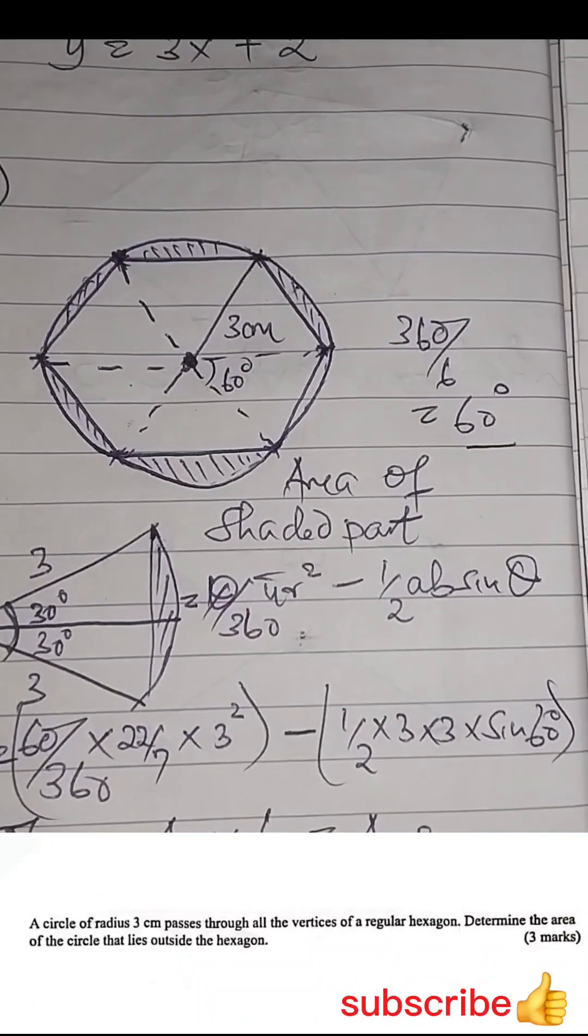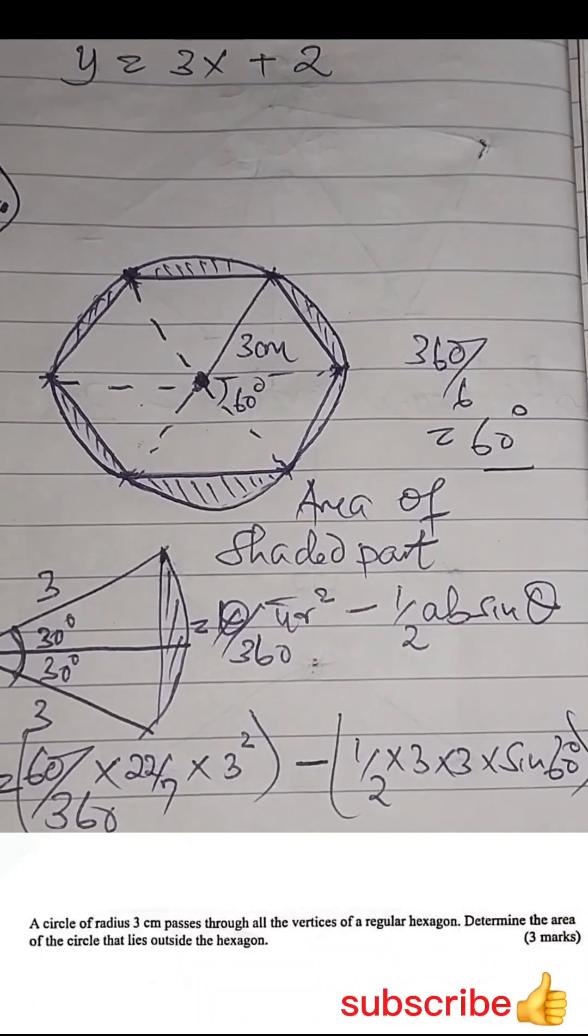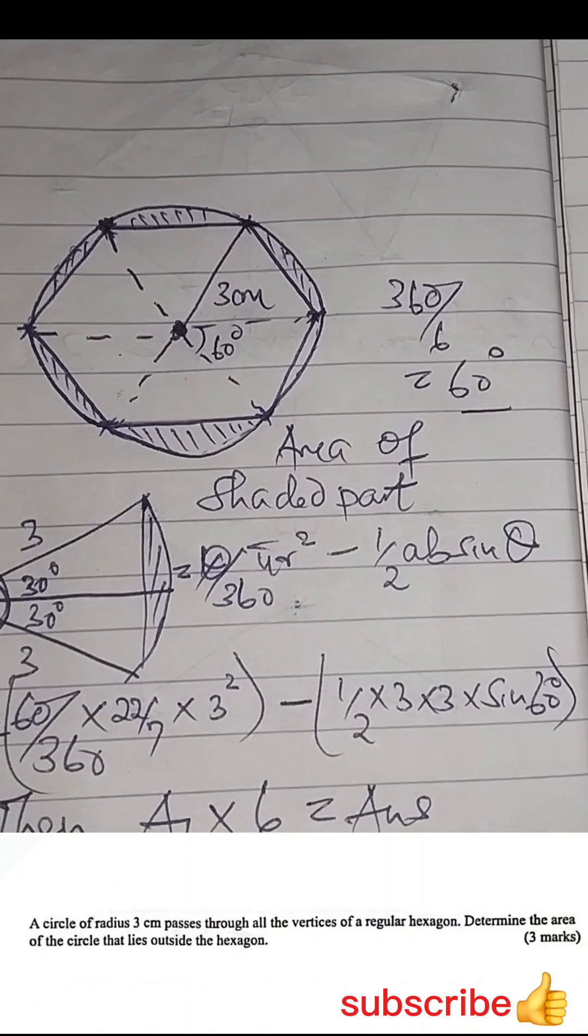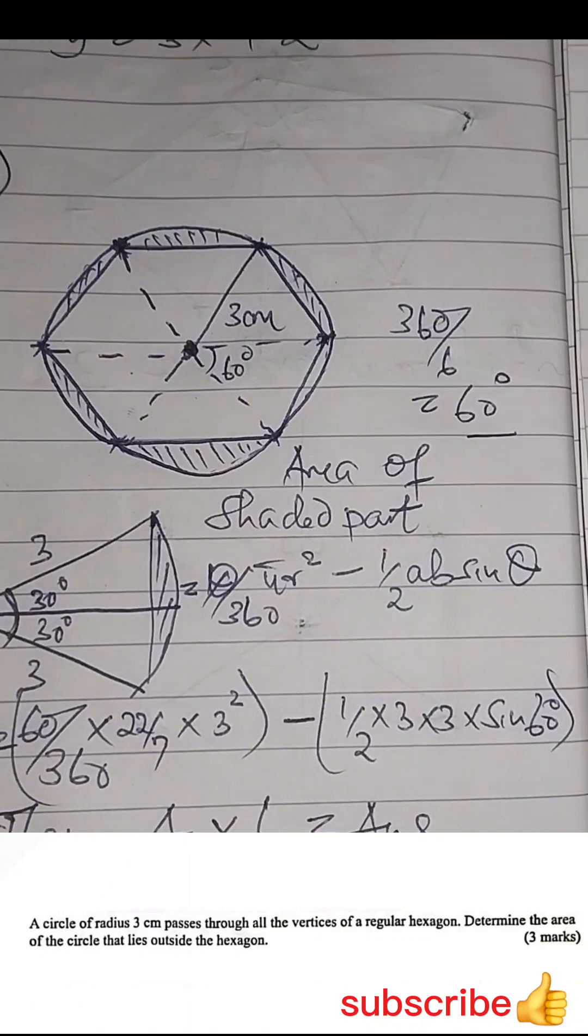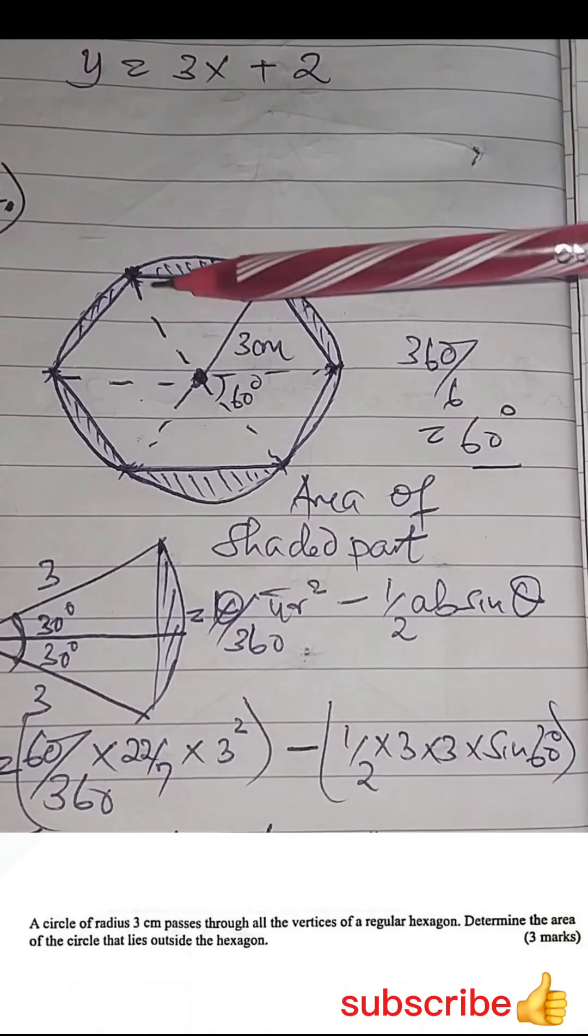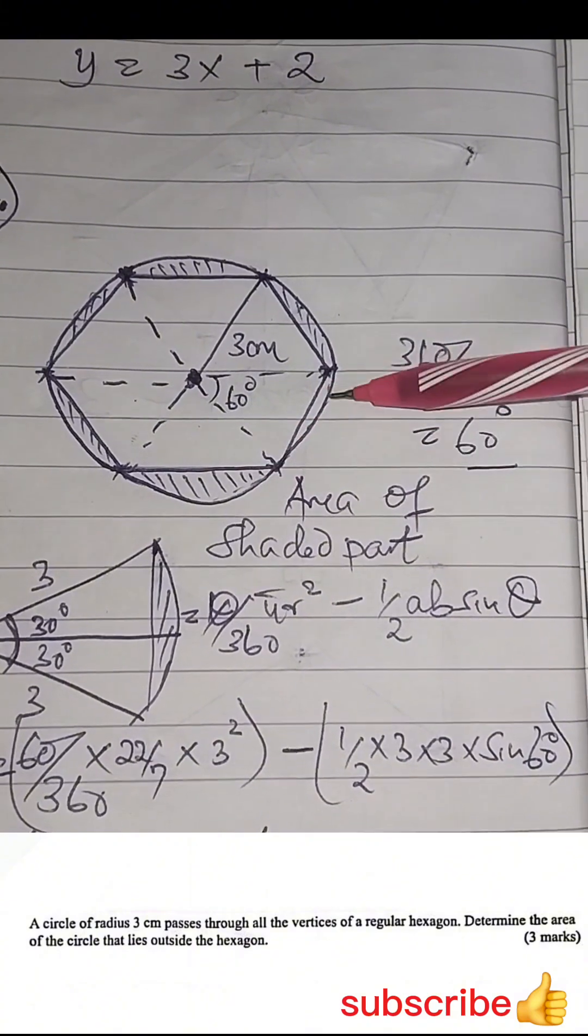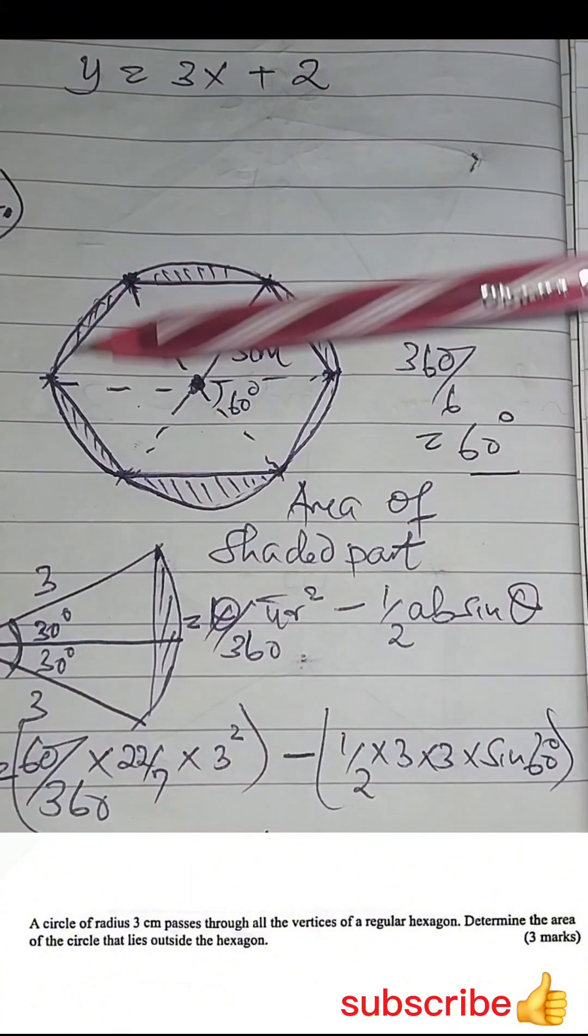Question 4, KCAC 2024, paper 1. You have a circle passing through the vertices of a hexagon. A hexagon is a six figure polygon.